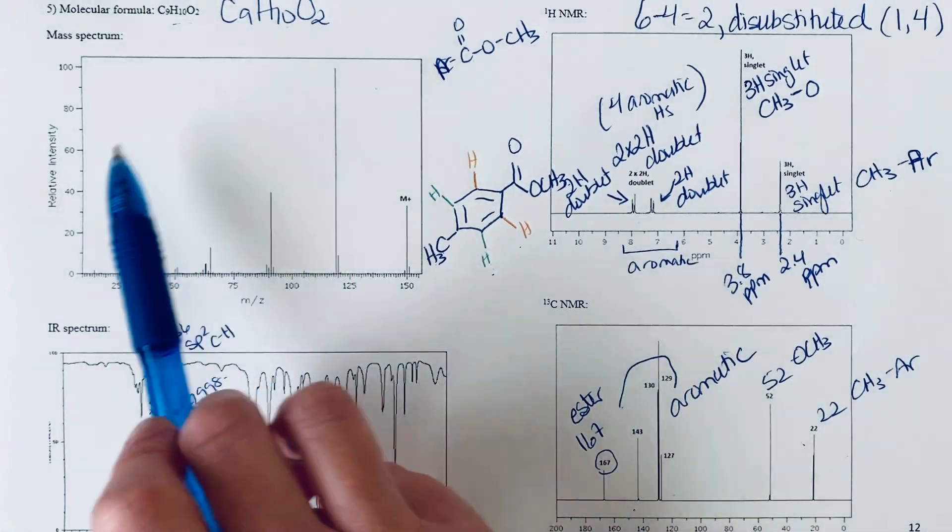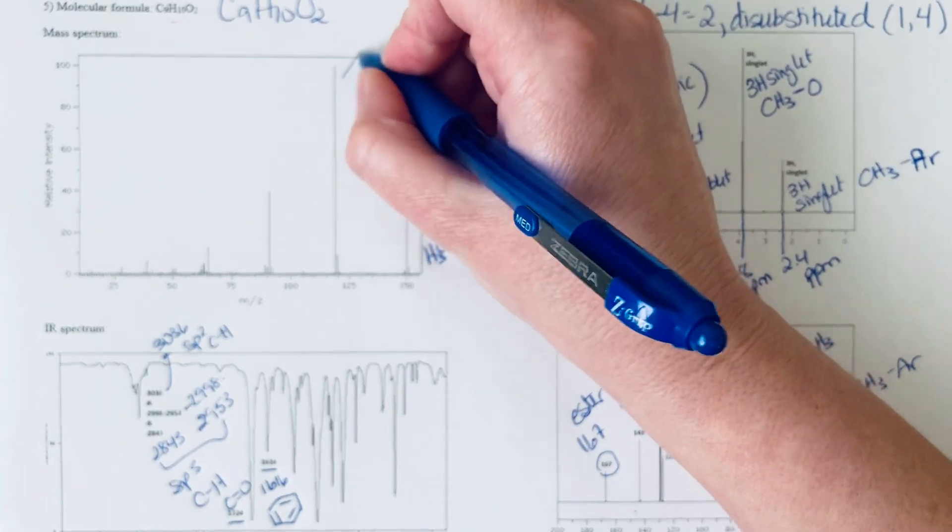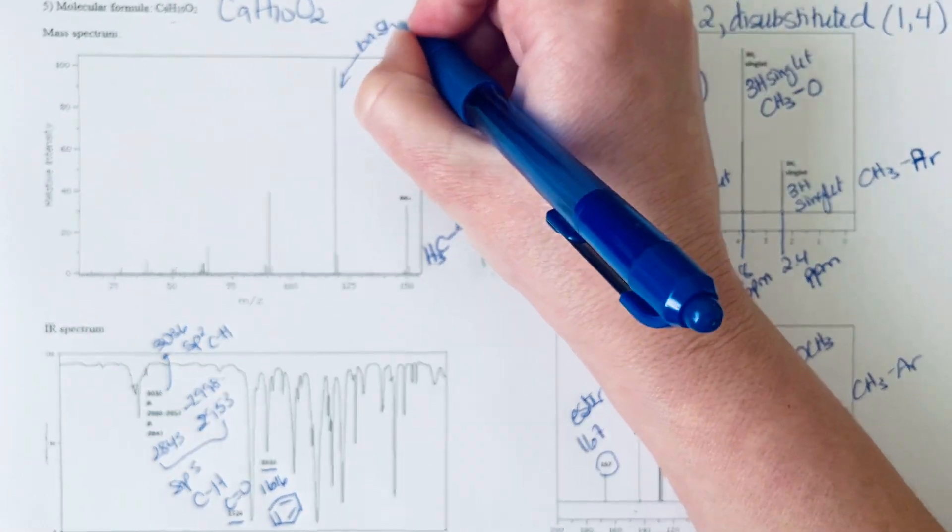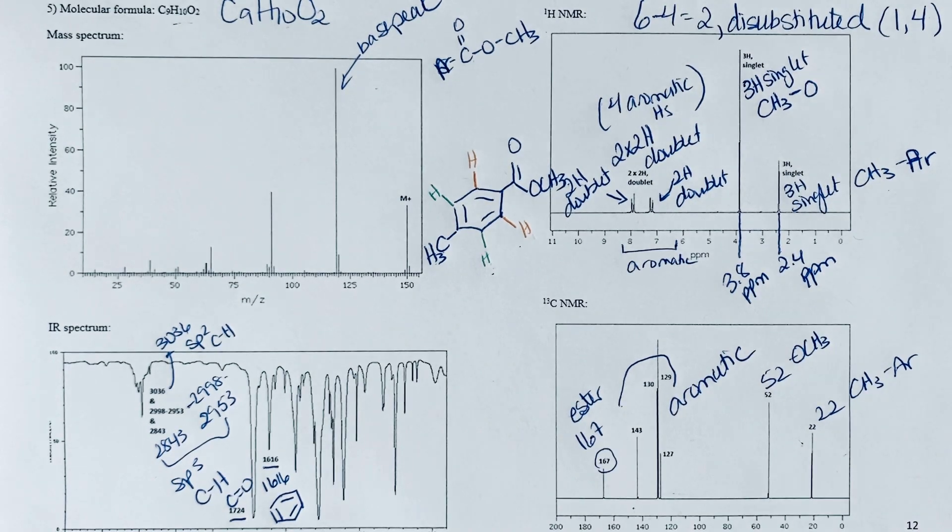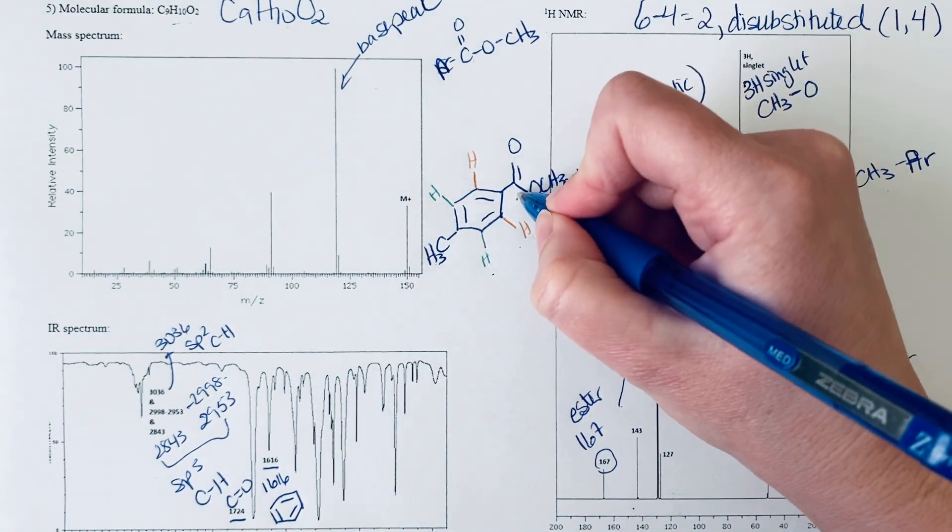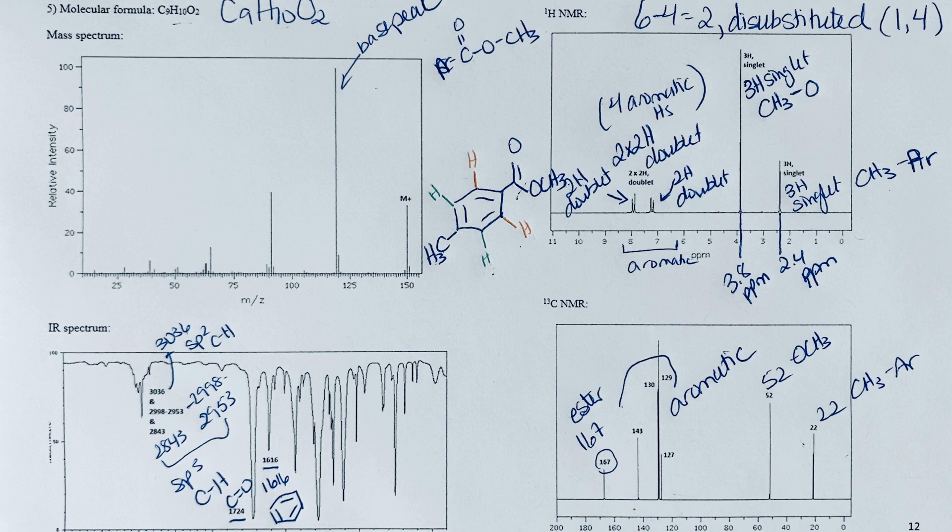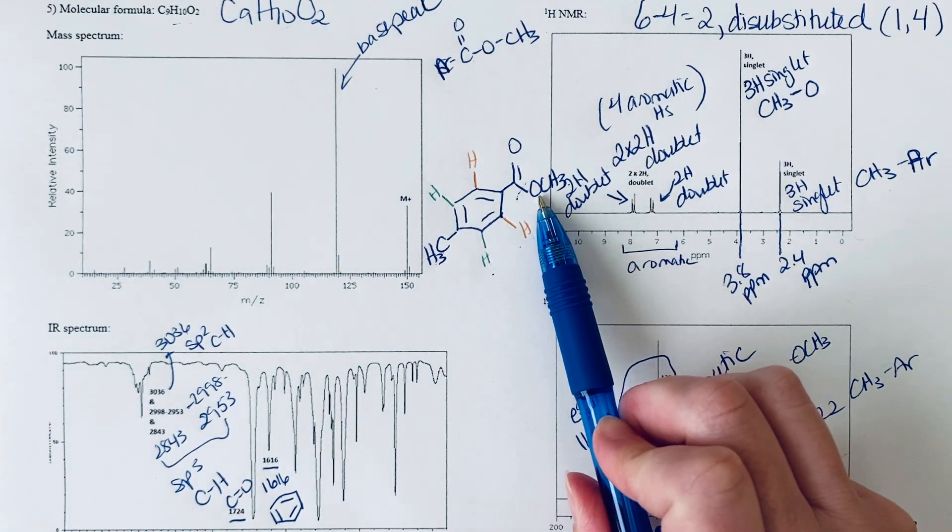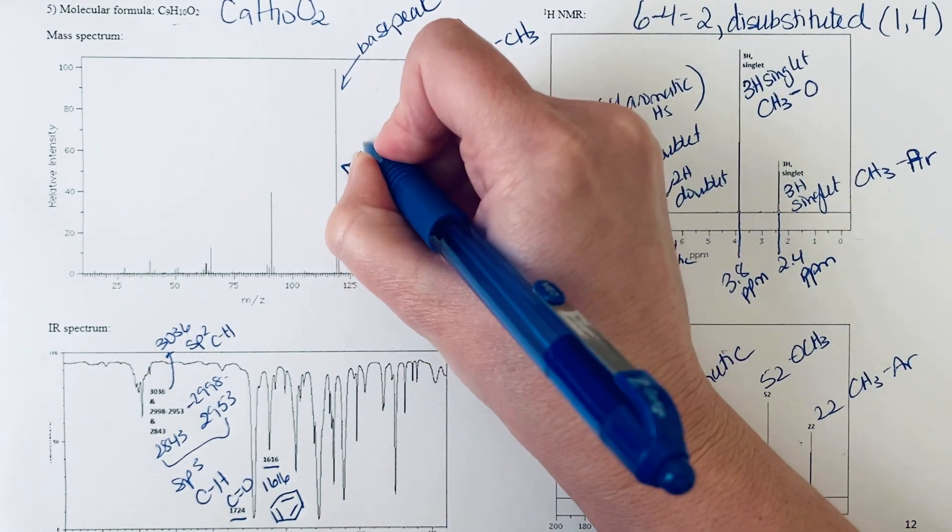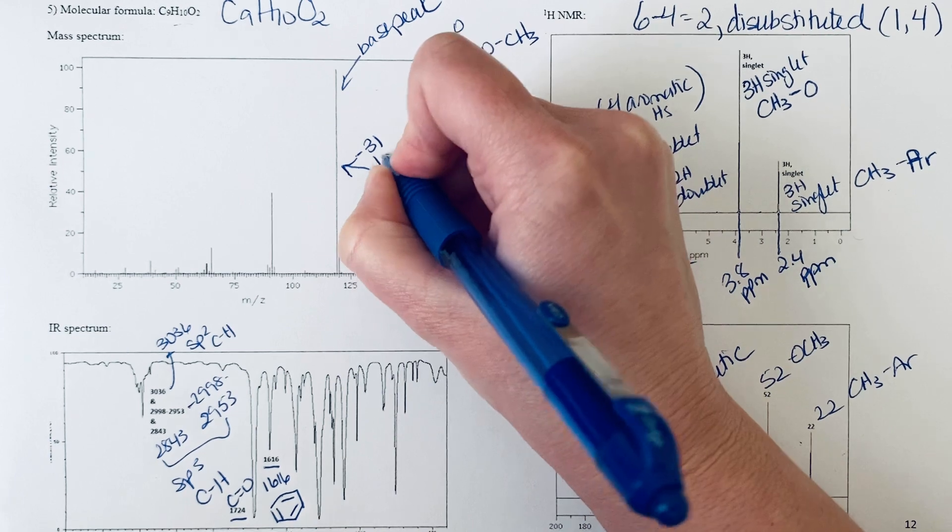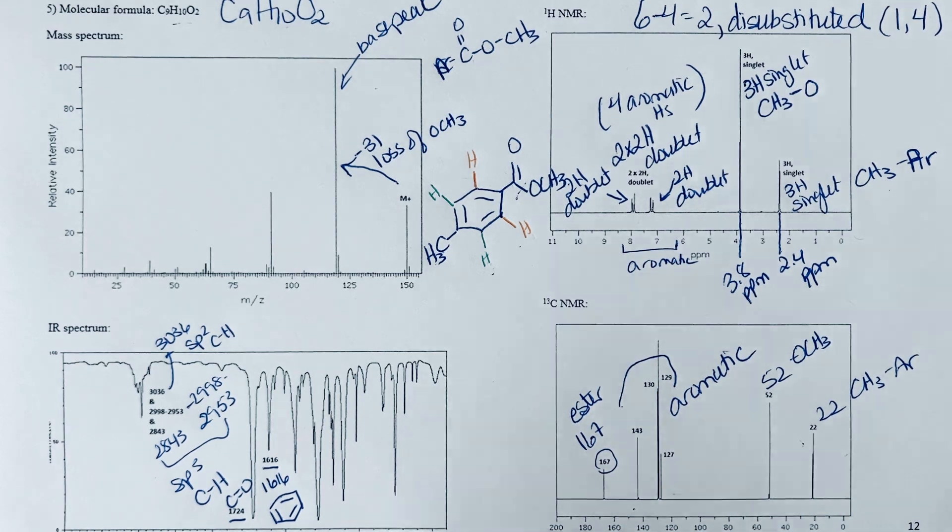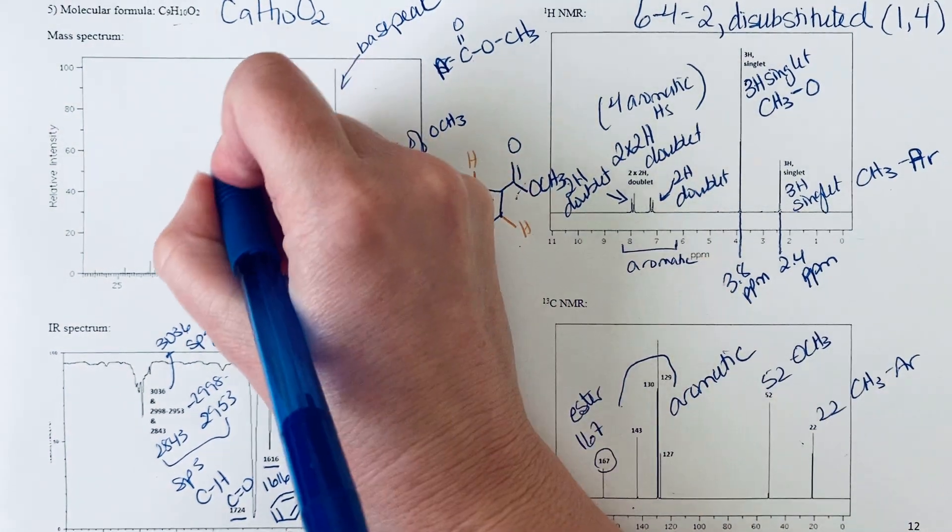Lastly, we should look to the mass spectrum and make sure that we can explain the base peak. Here is our base peak, the one that is at 100% abundance. We would expect at this point they're going to cleave off that methoxy group. A methyl group is 15, oxygen is 16, so 31. That is actually the difference between this M+ down to where that is. We're losing 31, so that's the loss of that OCH3. That is what we'd expect to give rise to our base peak—we're going to get this resonance-stabilized cation.